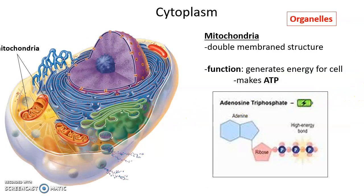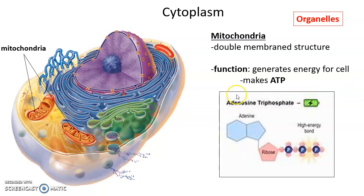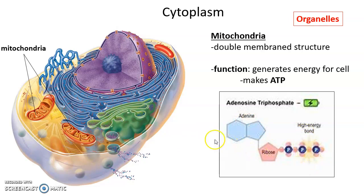Mitochondria are very important organelles. They have a double membrane structure — two phospholipid bilayers — and are very important in the production of energy for the cell. It is the mitochondria that produce ATP, the energy our cells use. ATP has three phosphates, and the bond between the second and third phosphate is where that high energy is stored. Mitochondria are the energy production structures of the cell.